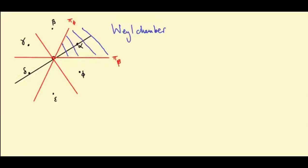So notice that this Weyl chamber is cut out by two of the root hyperplanes. I don't need all three. So this is cut out by a subset of the root hyperplanes.